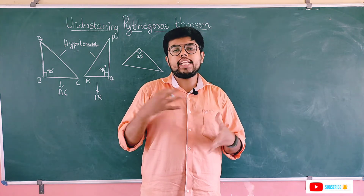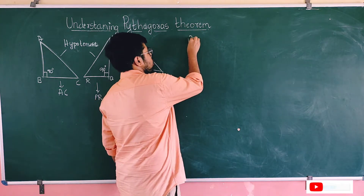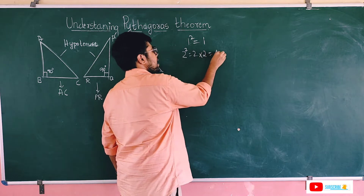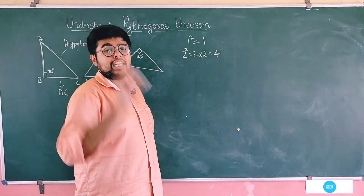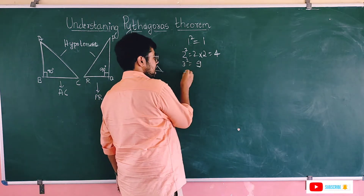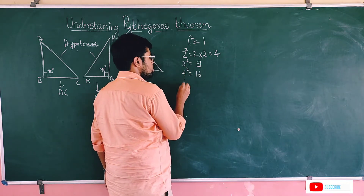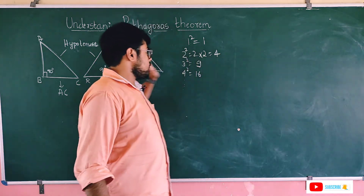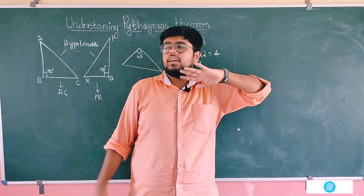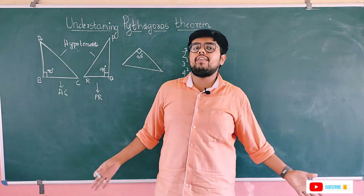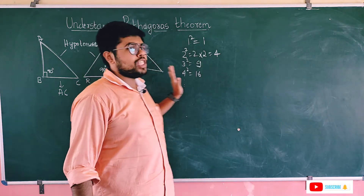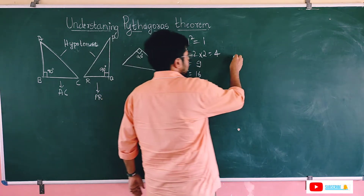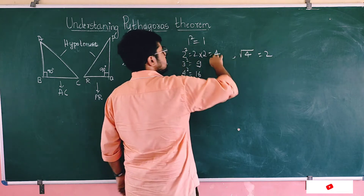Before stating the theorem, you need to know squares and square roots. A square means multiplying the same number by itself: 1² = 1, 2² = 4, 3² = 9, 4² = 16, and so on. Square root is just the opposite: √4 = 2, √9 = 3, √16 = 4. It is always better to memorize squares from 1 to 20, and also 25² = 625, so √625 = 25.